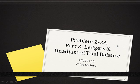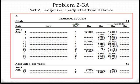Problem 2.3a, Part 2: Ledgers and Unadjusted Trial Balance. Previously in this problem, we recorded the journal entries for the transactions that happened in April. What we're going to do now is transfer the journal entries to the ledgers so we can get a final balance for each and every account, so we can then build the unadjusted trial balance.